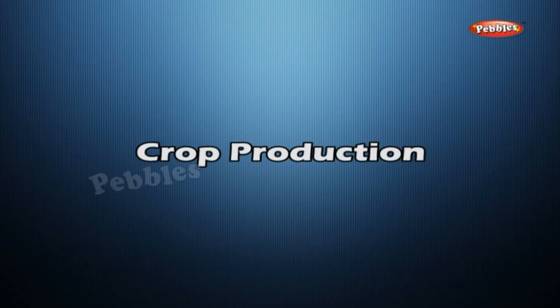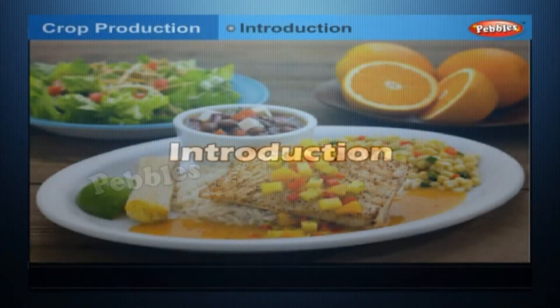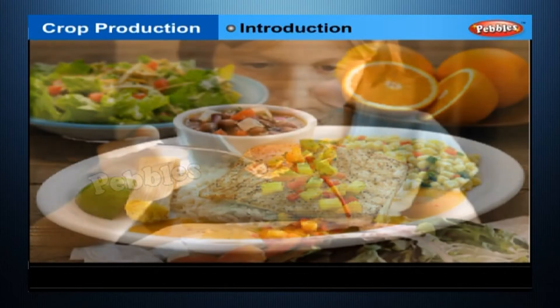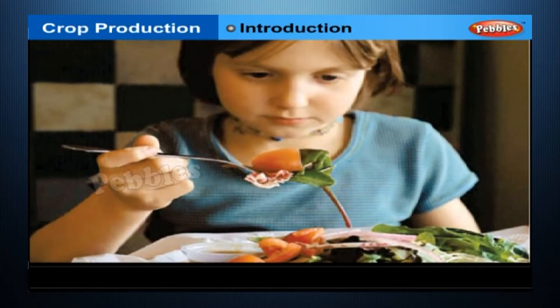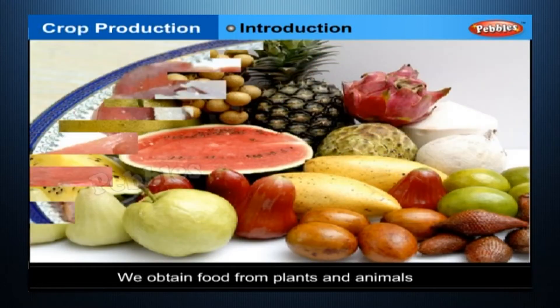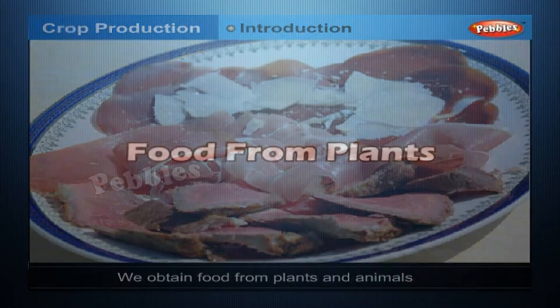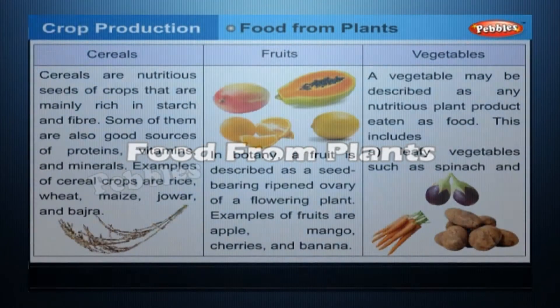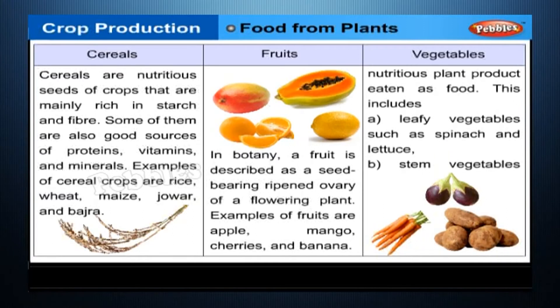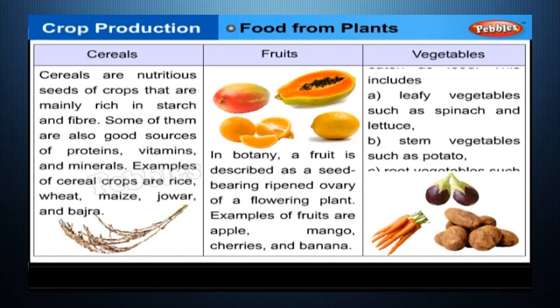Crop Production - Introduction. Food is the main source of energy and nutrition for all organisms, including human beings. This explains the importance of food in our life. We obtain food from plants and animals. Any plant that is cultivated on a large scale for food or any other use is called a crop.